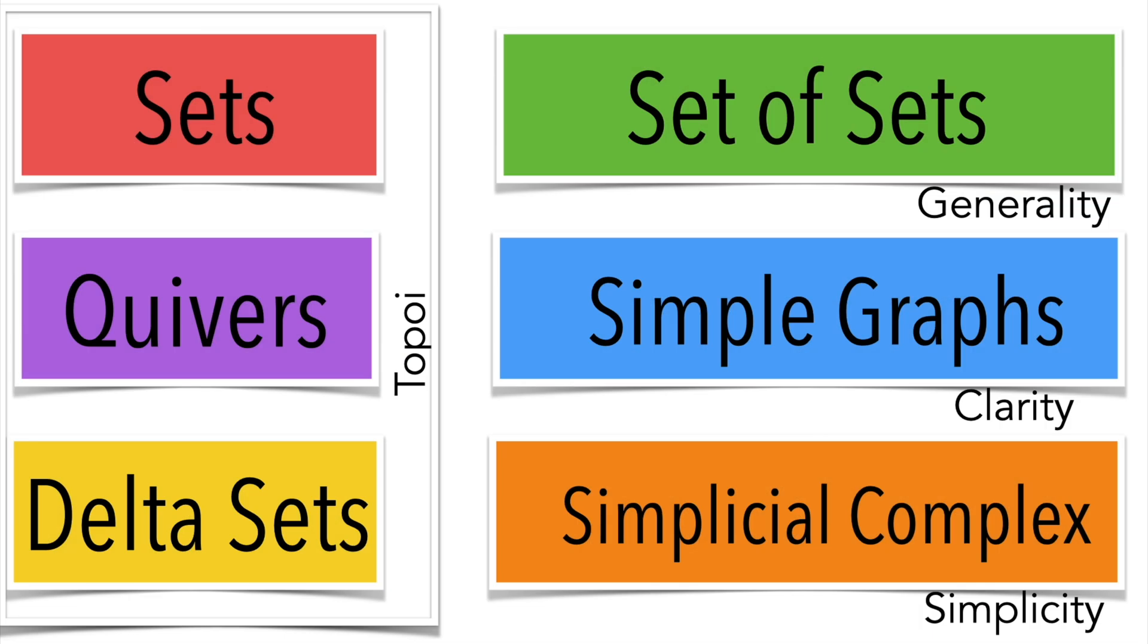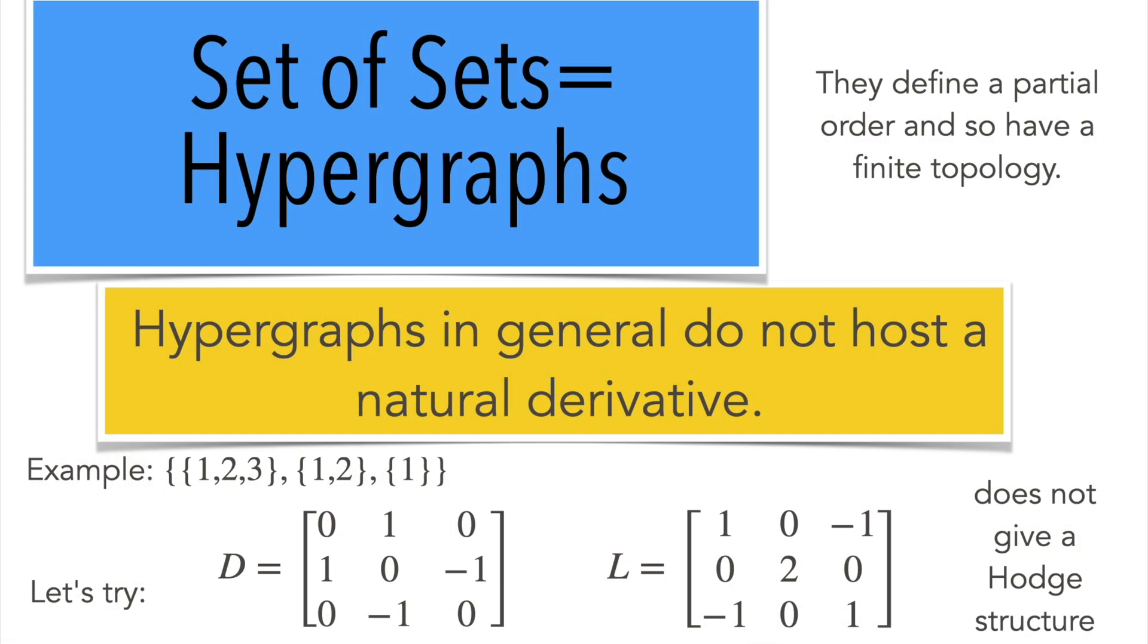Finite structures come in different forms. We can look at sets, we can look at graphs, quivers, simplicial complexes or delta sets. Hypergraphs such as set of sets, but it doesn't come with a natural derivative. That's why delta sets have an interesting Dirac matrix on it.